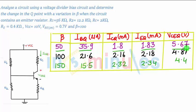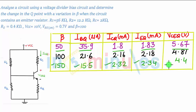For beta equal to 150, you get IBQ of 15.5 microamperes, ICQ of 2.32, IEQ of 2.34, and VCEQ of 4.4 volts. The units are written in brackets at the top of the table.